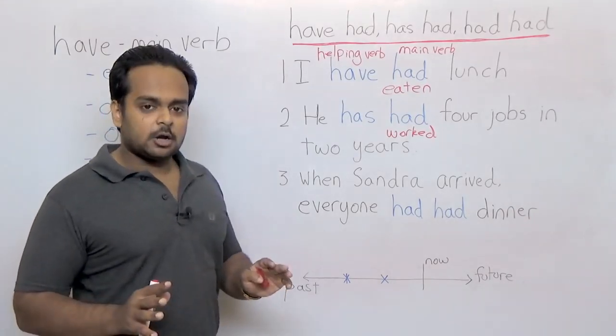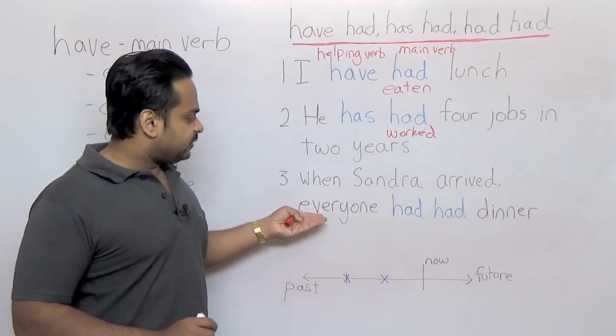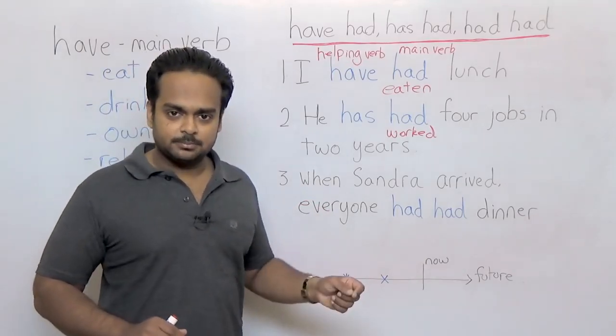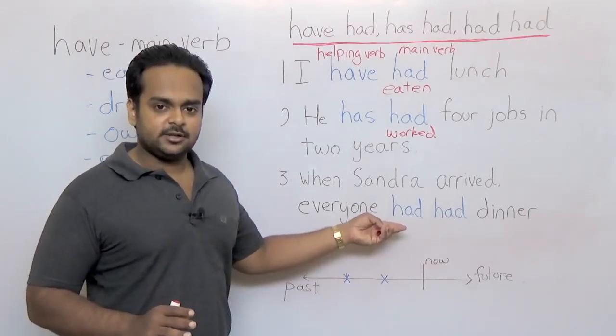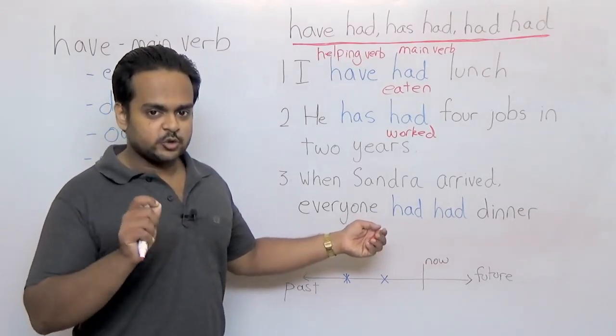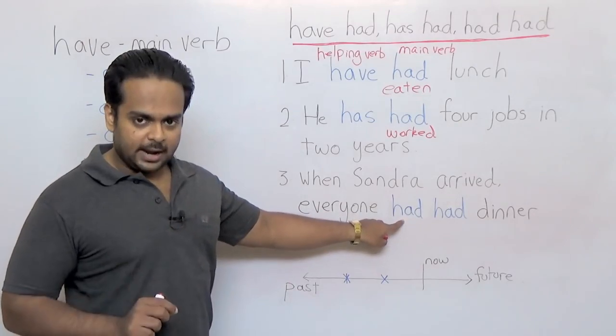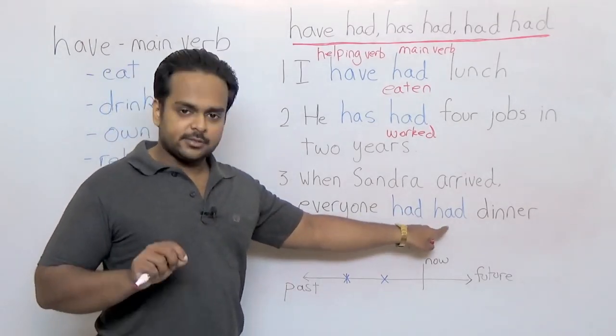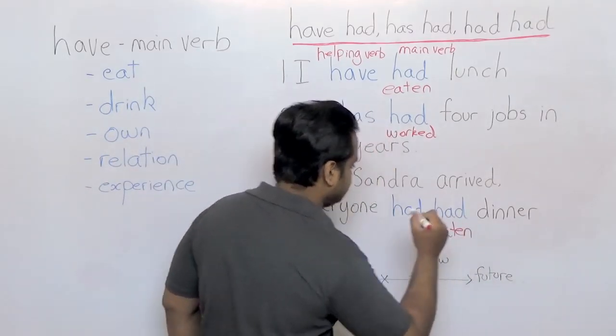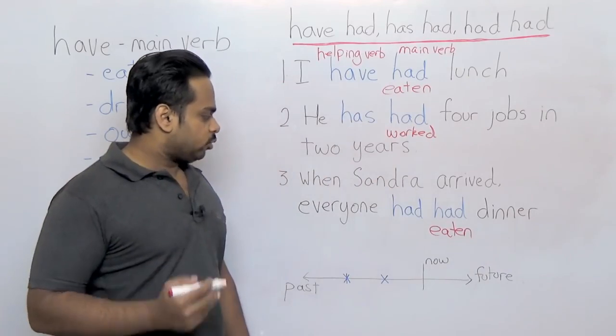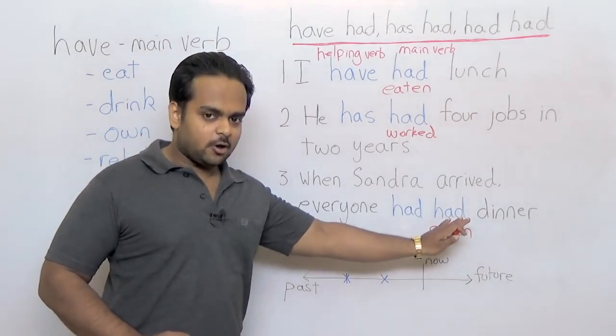Let's now move on and talk about the more challenging part which is had had. When Sandra arrived, everyone had had dinner. When you look at this sentence first, it might seem a little scary with two had's in it. But we have this tool of separating the two haves. So let's do that. This is a grammar had and this is the main verb had. And this had means once again eaten. So when Sandra arrived, everyone had eaten dinner is the meaning. So one problem is now solved.